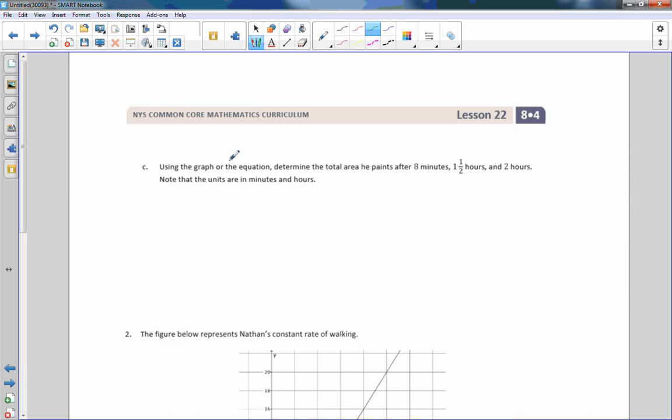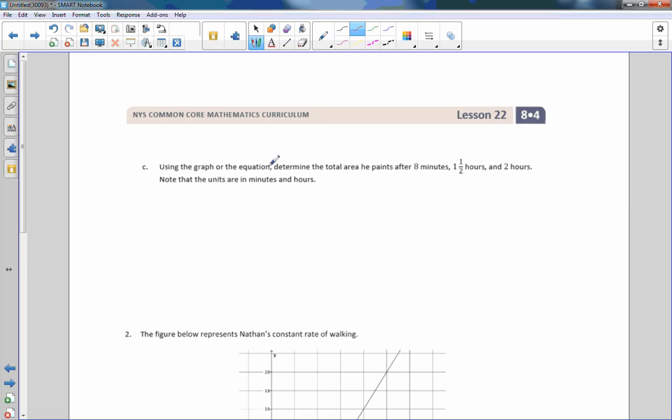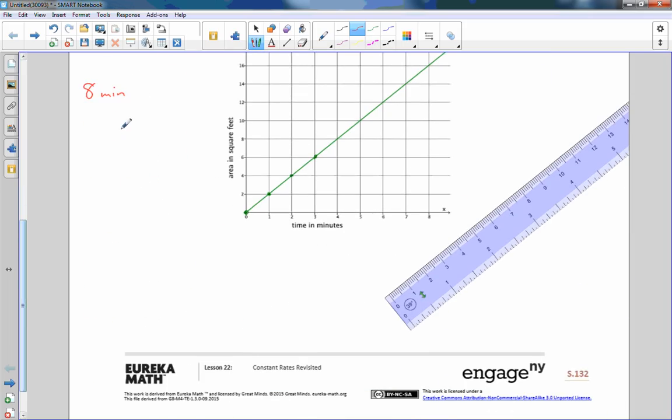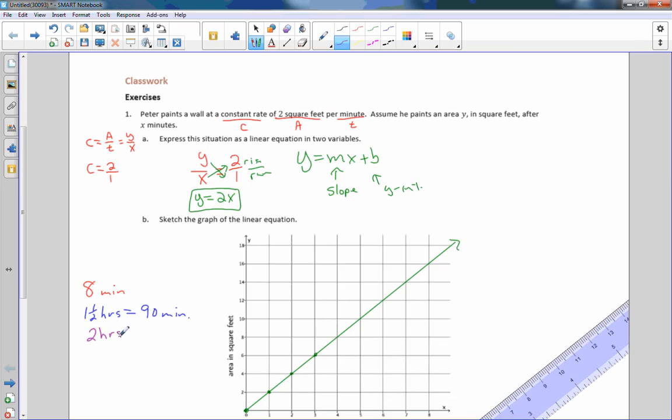Part C using the graph or the equation, determine the total area he paints after eight minutes, one and a half hours and two hours. So I'm going to show you on the graph first. So here's the graph and I'll write these down in different colors. Eight minutes. One and a half hours. So it says using the graph or the equation. So one and a half hours, well, that equals 60 minutes and that's 30. So that's 90 minutes. And then two hours, which is 60 times two or 120 minutes.